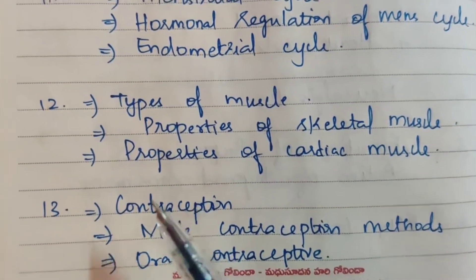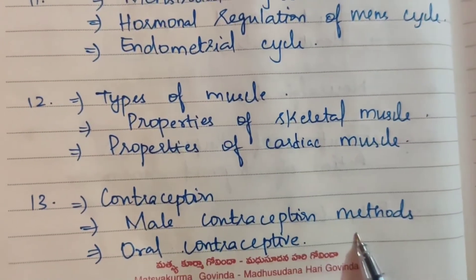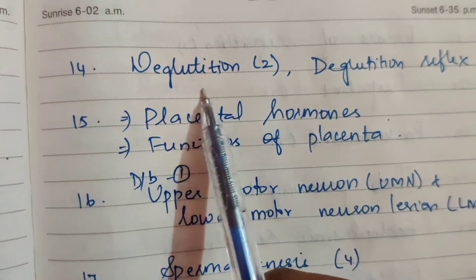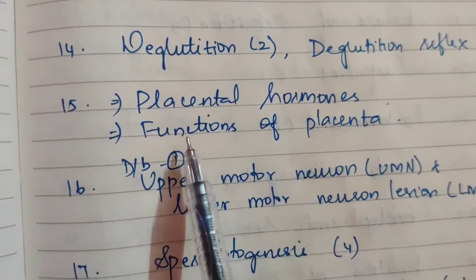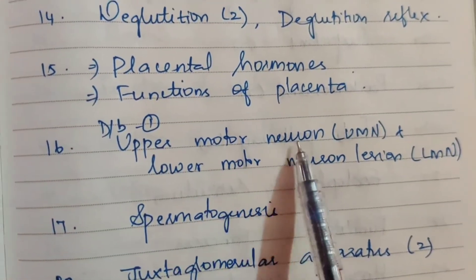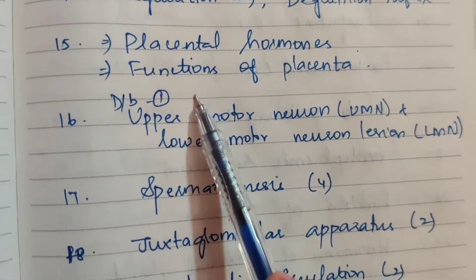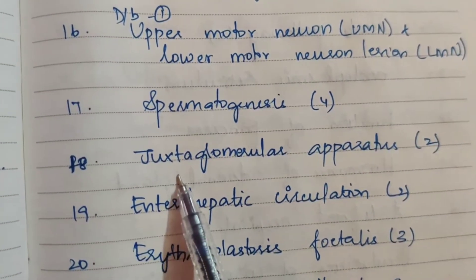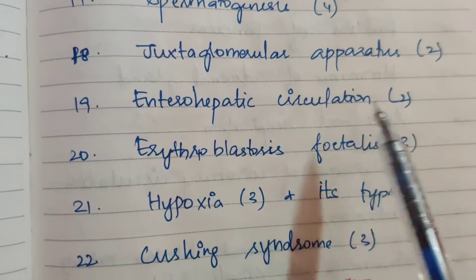Hormonal regulations and contraception — asked multiple times; oral contraceptives also asked. Fourteenth: deglutition — two times; deglutition reflex. Placental hormones. Eighteenth: juxtaglomerular apparatus — two times. Nineteenth: enterohepatic circulation — two times.